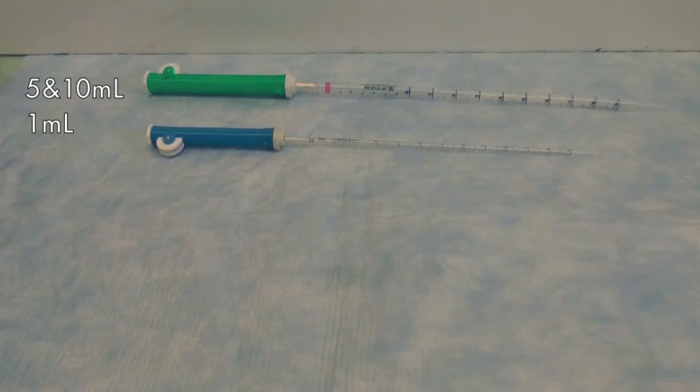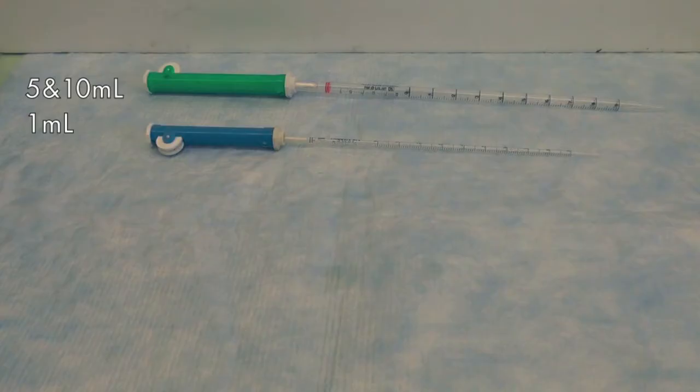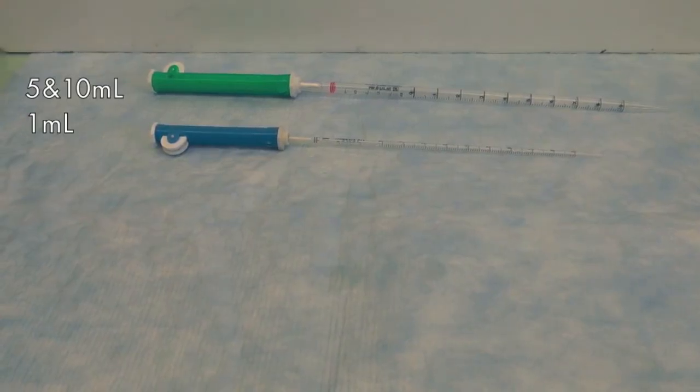Pipette pump is one common tool used to operate a pipette. Pipettes in different sizes are coupled with different pipette pumps. The green pipette pump is used for 5 and 10 milliliter pipettes, while the blue pipette pump is for 1 milliliter pipettes.